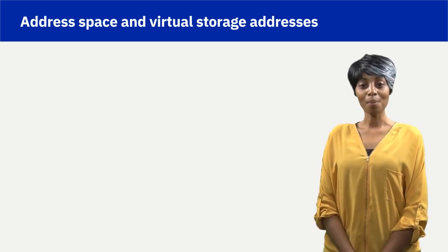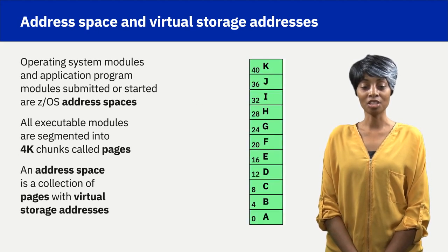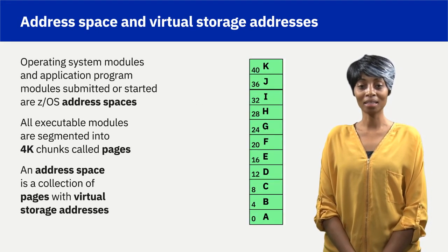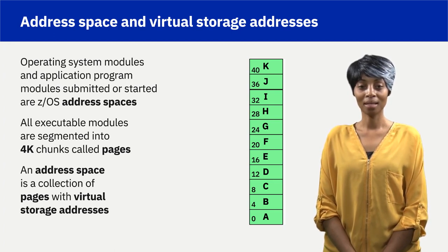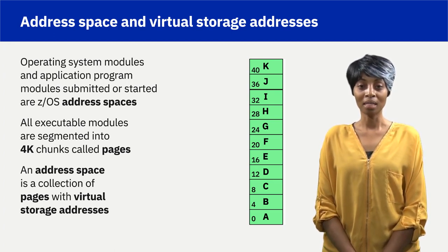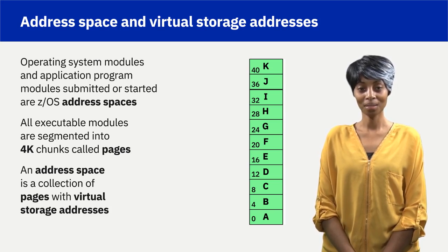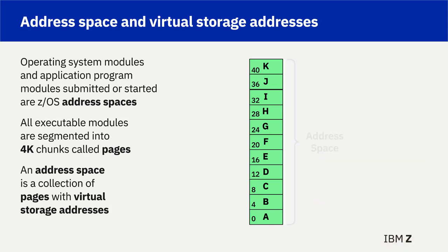The operating system and application programs are a collection of executable modules for the code and data. Each operating system and application program executable module is either started or submitted to become active. Each active executable module is called an address space.